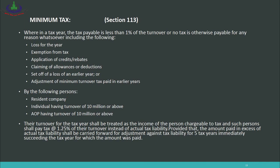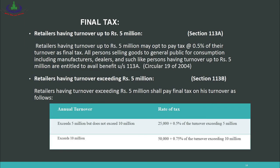A concept similar to minimum tax is final tax, and this option is given to retailers. Because many small-scale businesses in our country find it difficult to understand and comply with all tax rules, they are given the option of final tax under Section 113A. Retailers having turnover up to rupees 5 million may opt to pay tax at the rate of 0.5% of their turnover as final tax. Instead of performing all income-from-business calculations, they simply pay 0.5% of their sales, and this is treated as their final income tax — no further tax needs to be paid.